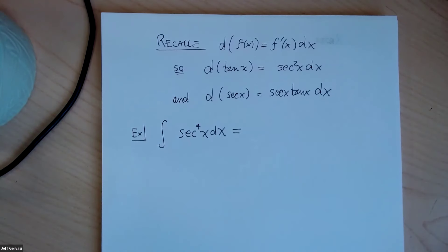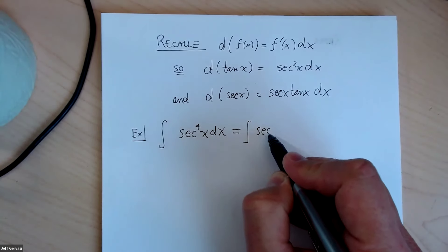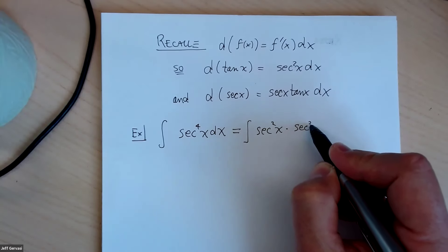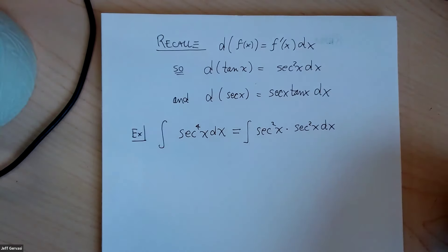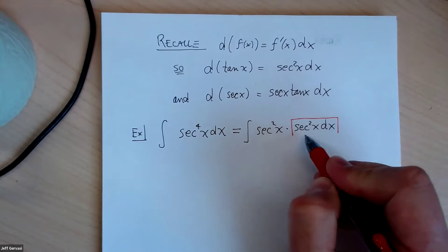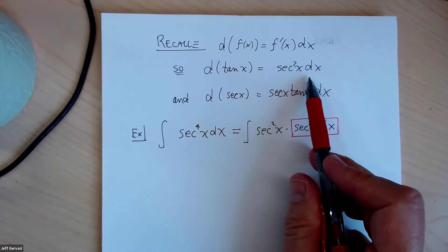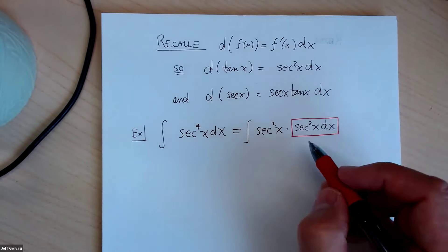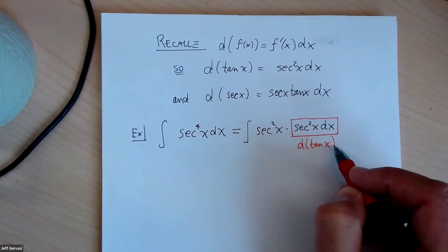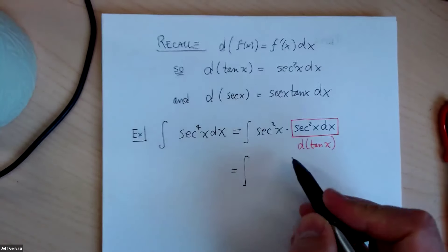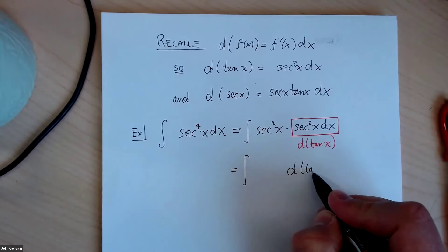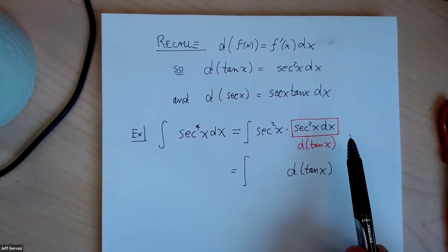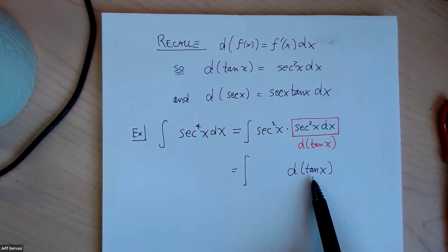Here, I want to integrate the secant to the fourth power of x dx. If the power of the secant is even, break two of them away and pair them with the dx in the back. The reason for this is because secant squared of x dx is equal to the differential of the tangent of x. So I'm going to rewrite my integral accordingly — replace everything in the rectangle with the differential of the tangent of x. That tells me I'm no longer integrating with respect to x, but with respect to the function tangent of x.